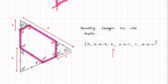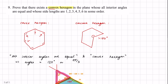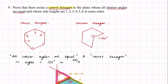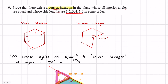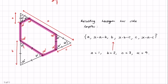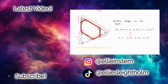We can construct a convex hexagon with all interior angles equal and side lengths one, two, three, four, five, six by setting a equals 1, b equals 2, c equals 3, and x equals 9. This gives sides 1, 6, 2, 4, 3, 5 — which is exactly 1 through 6 in some order. It's a really beautiful question and that completes the proof.